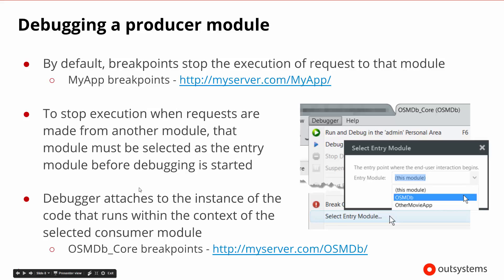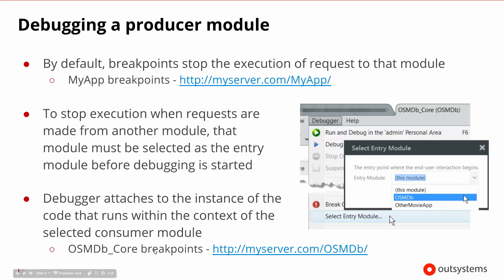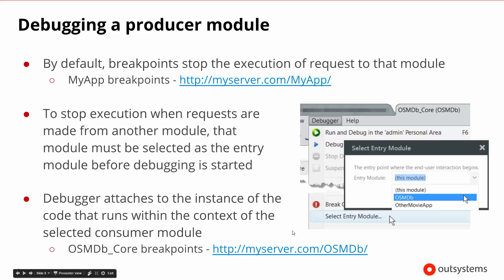What setting the entry module tells the debugger to do is attach to the instance of the code running within the context of the consumer module. So here we're inside of OSMDb Core but we're asking it to start OSMDb — so someone navigating to OSMDb will activate those breakpoints anytime OSMDb uses the core. When we have multiple modules, we need to be careful as to which one we're selecting for the entry module. This is all on the server side.